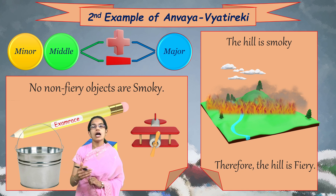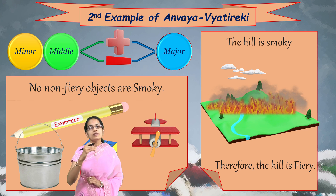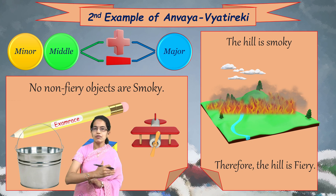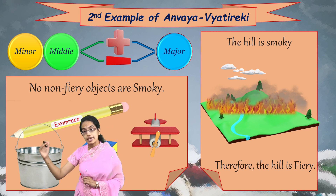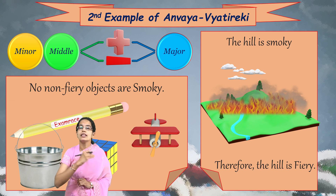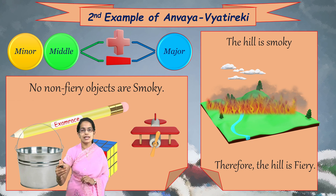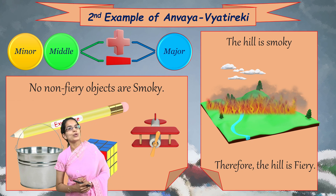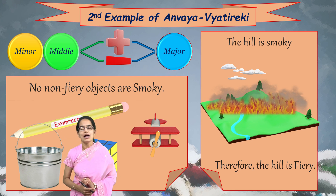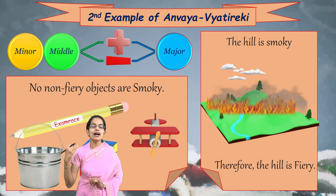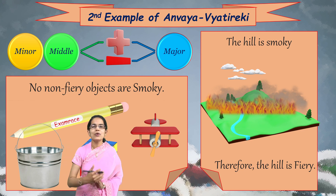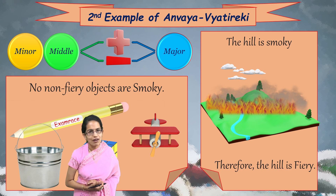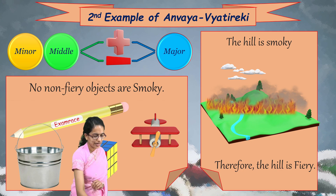We have understood three applications of Anumana: Kevalya Anvaya which is a complete positive relation, Kevalya Vyatireki which is a complete negative relation, and Anvaya Vyatireki where both co-exist. We will be covering many more interesting lectures on logic. Stay tuned and have a wonderful day ahead.